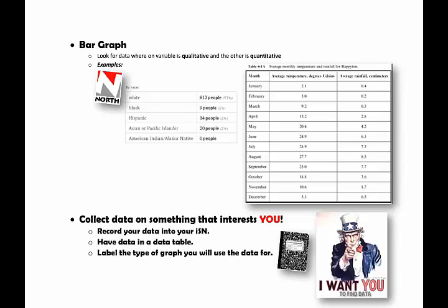For a bar graph, I'm looking for where one variable is qualitative and the other one is quantitative. In this case, I was doing enrollment of Middle School North by race, which is qualitative - it's words - and then I have the quantitative data over here, which are the numbers.